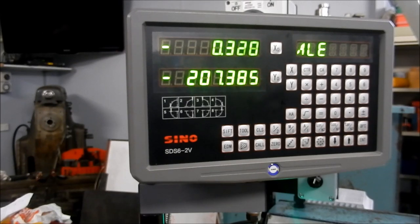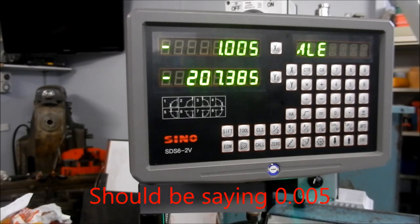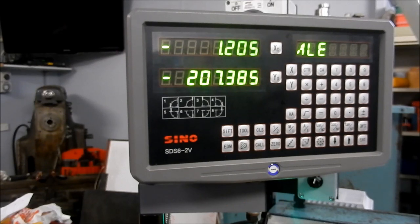0.2, 0.4, 0.6, 0.8. It's 1mm. So I'm 0.05 out and if I go back to the old money, 0.05 is actually around about two tenths of a thou. 1.2.